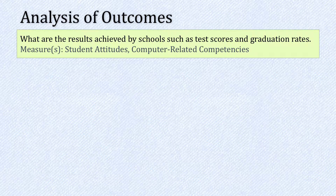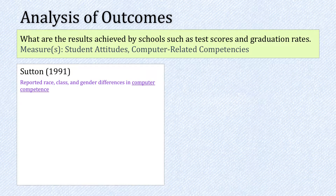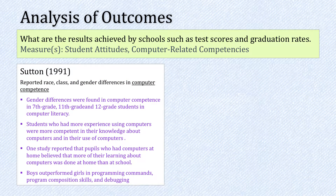The third area was analysis of outcomes — the results achieved by schools, such as test scores and graduation rates, with a focus on student attitudes and computer-related competencies. In 1991, Sutton reported race, class, and gender differences in computer competence. She found gender differences related to computer literacy — students with more experience using computers were more competent in their knowledge and use of them. One study reported that pupils who had computers at home believed more of their learning about computers was done at home than at school. Another study found that boys outperformed girls in programming commands, programming composition skills, and debugging.